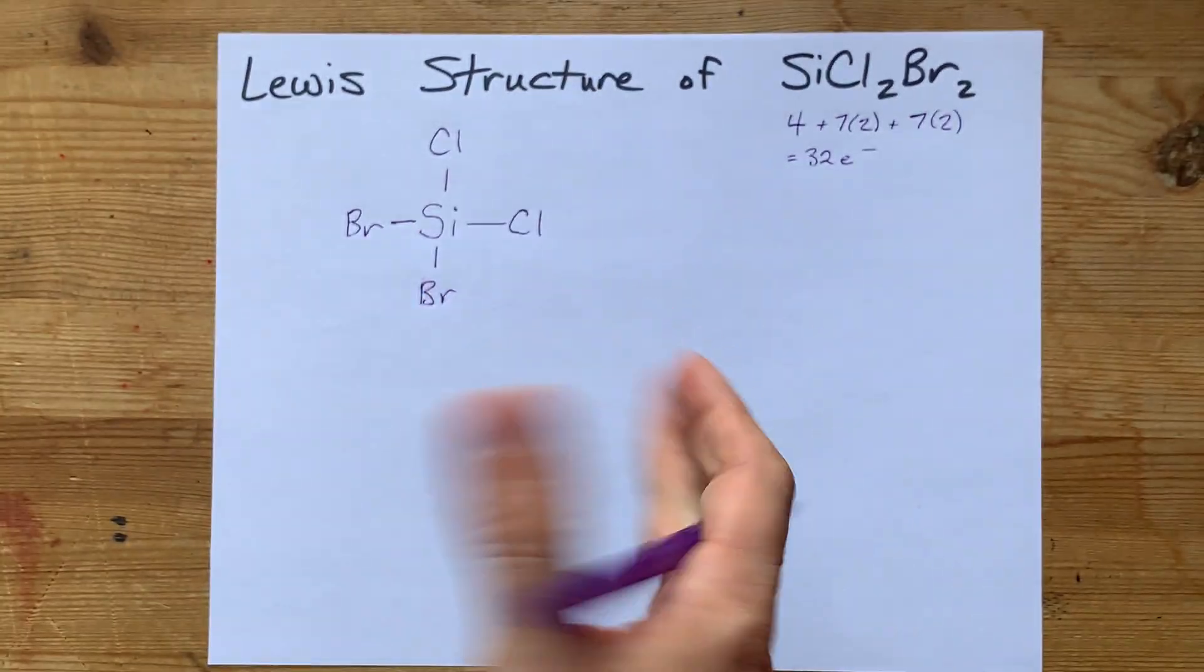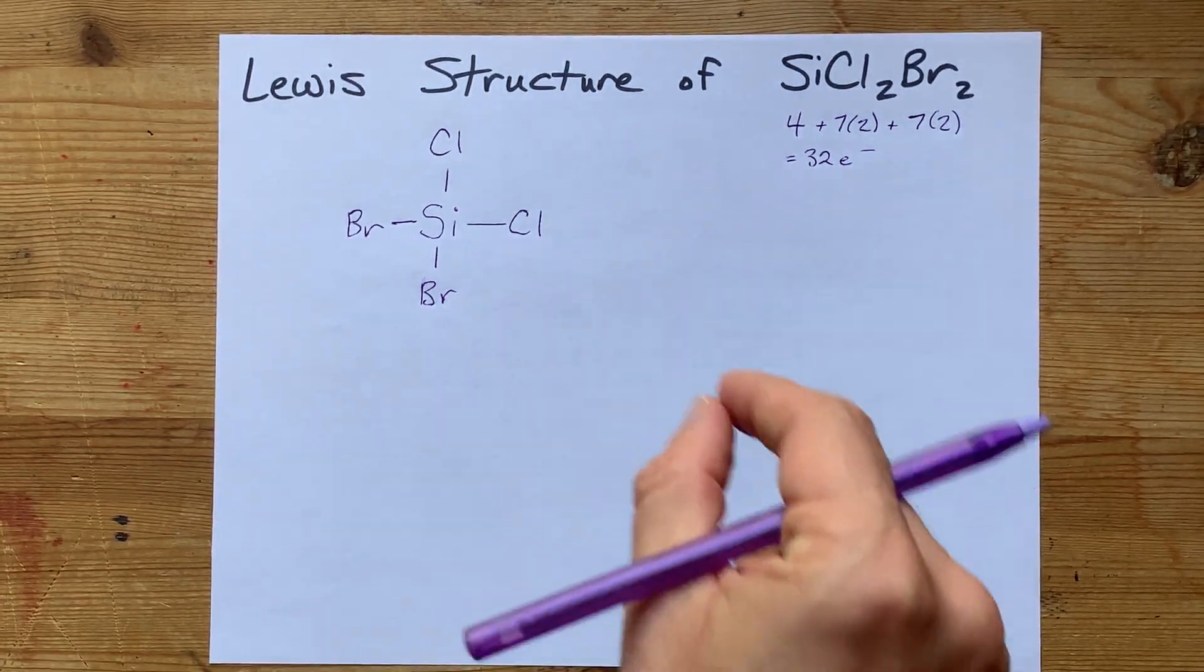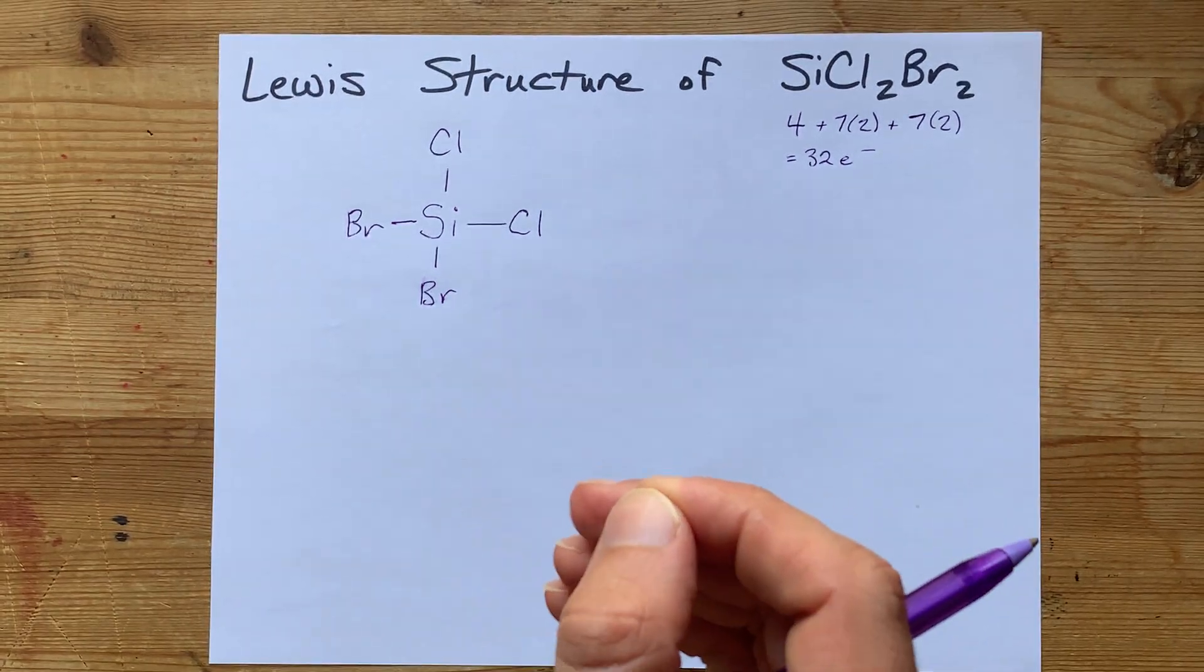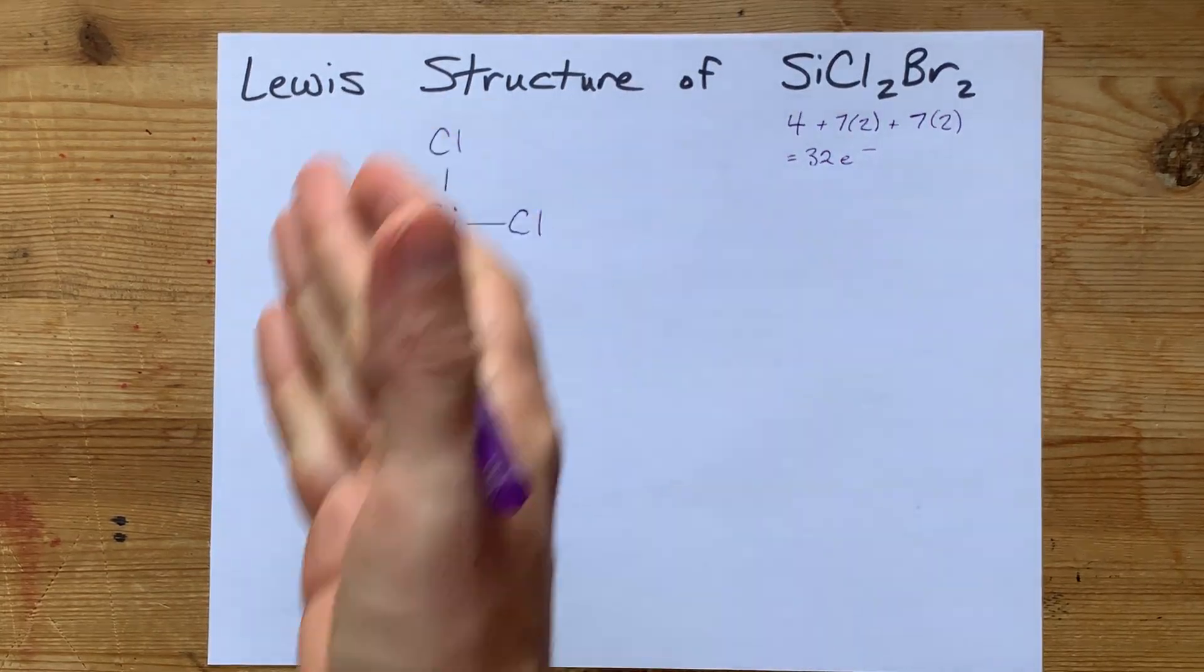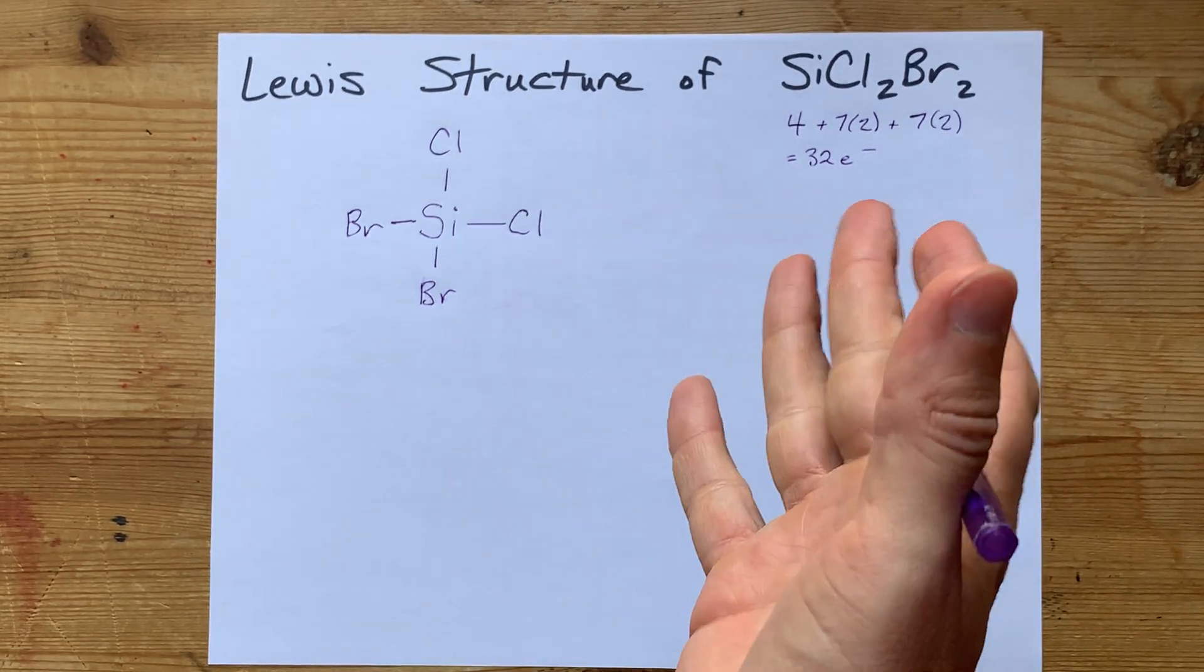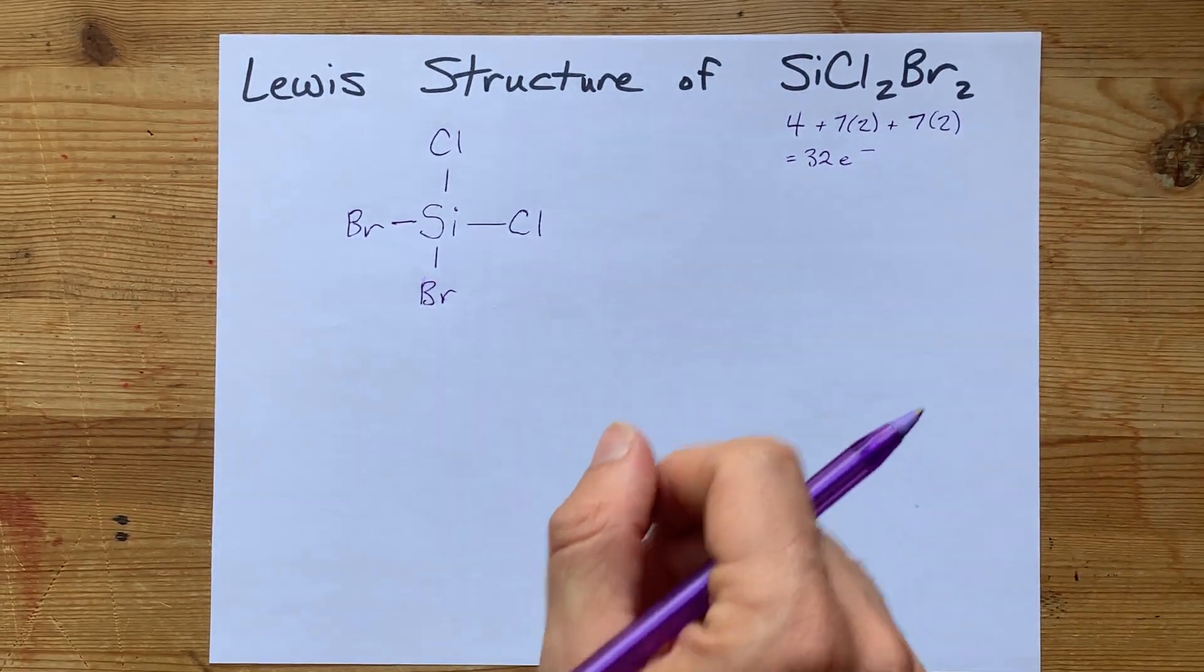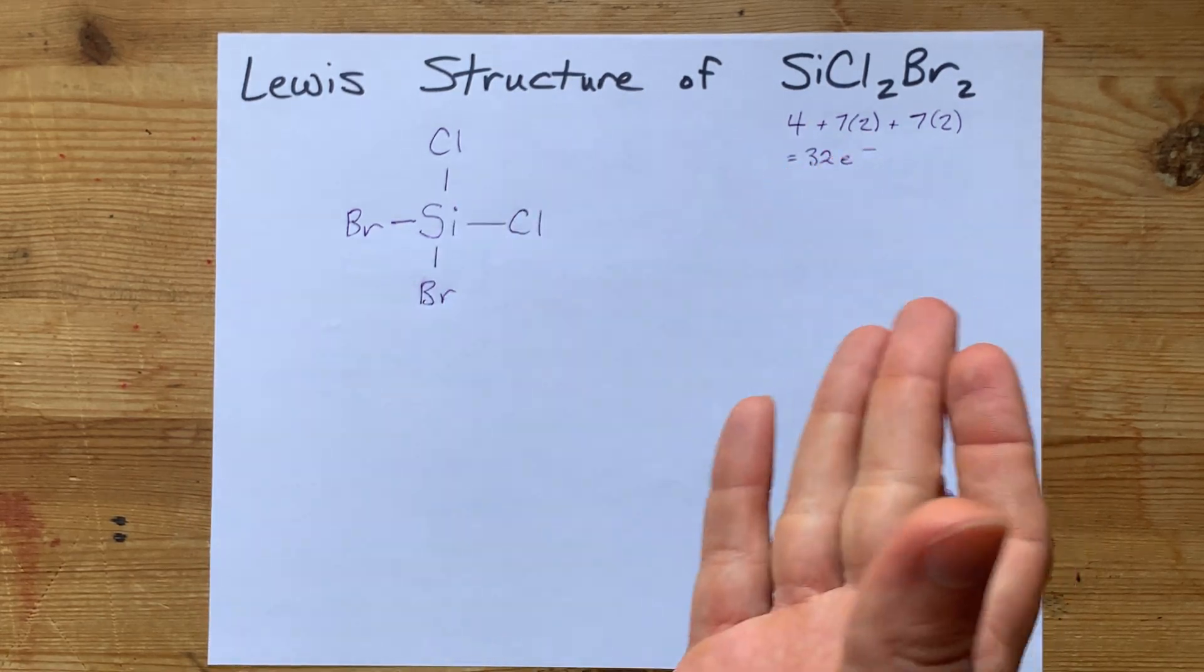The next step for me is to add lone pairs to all of the outer atoms to complete their octets. Chlorine and bromine do satisfy the octet rule, especially when they're on the outside of an atom. There are exceptions, but we want them to satisfy the octet rule here.